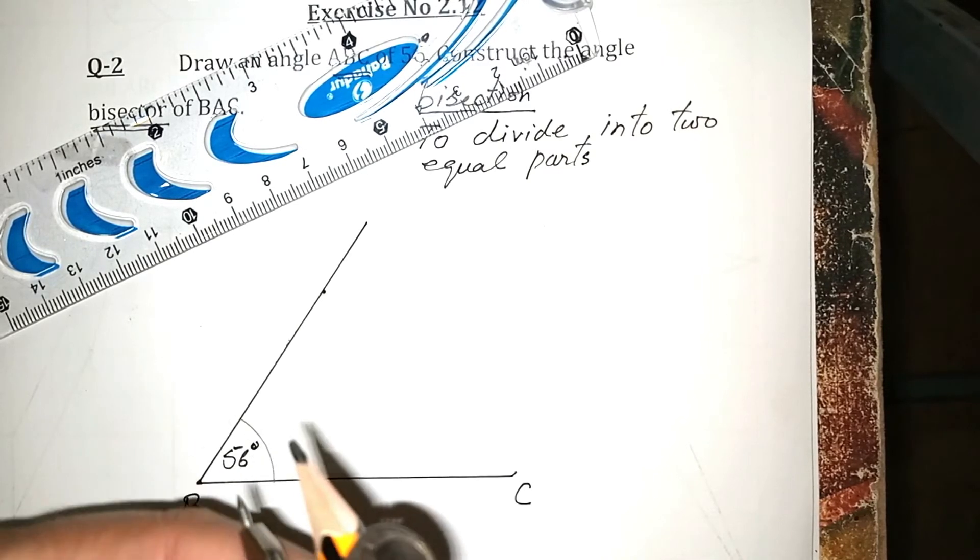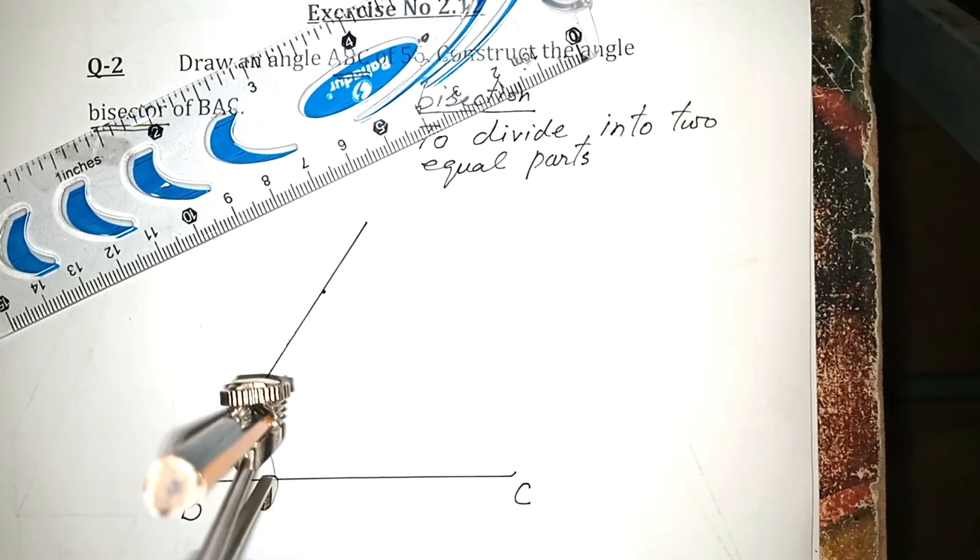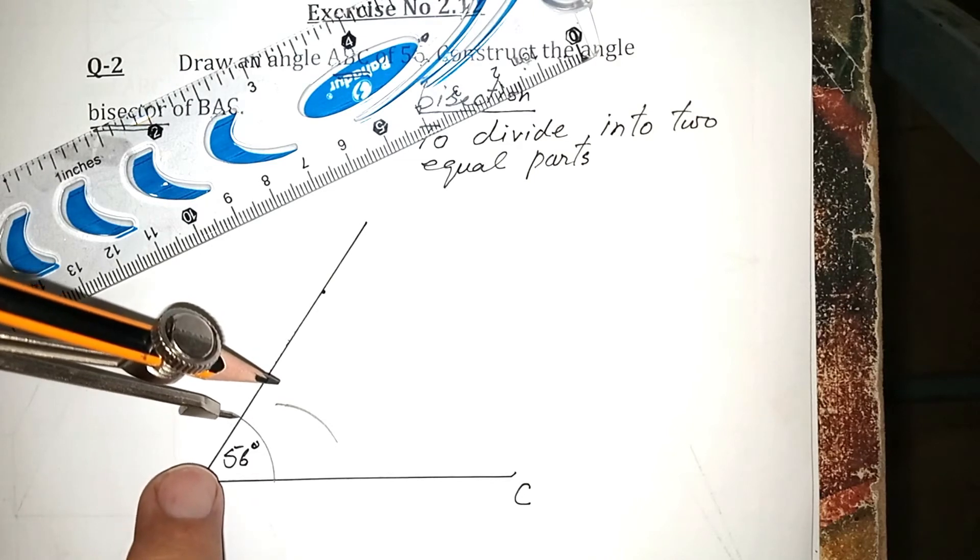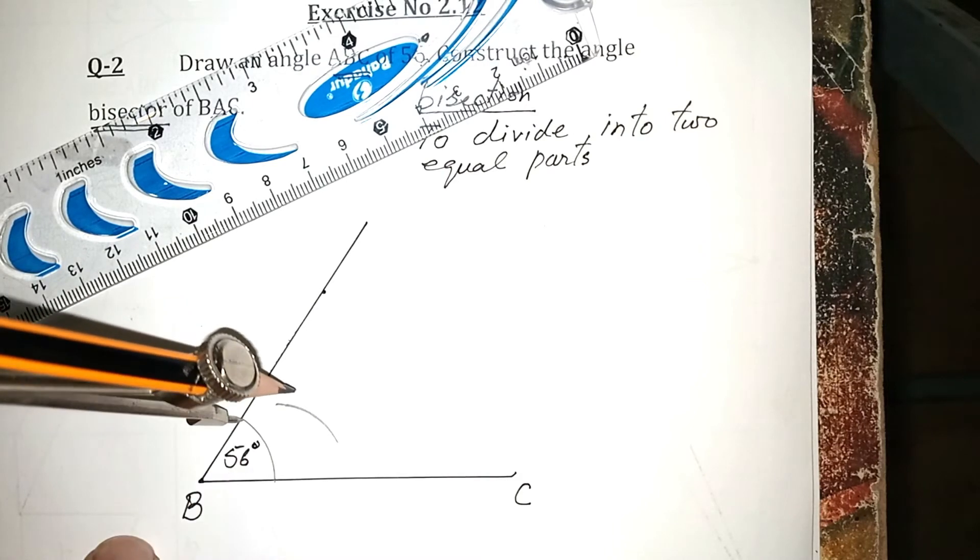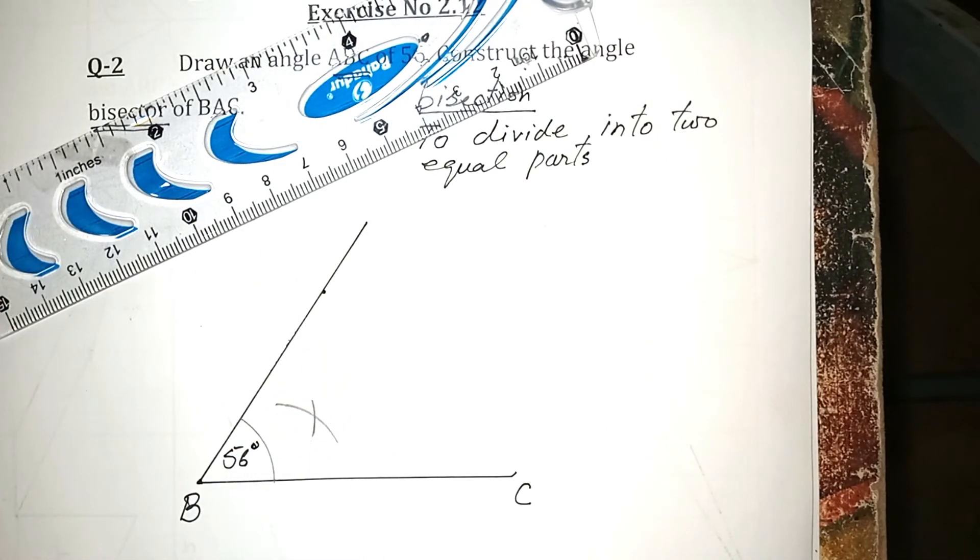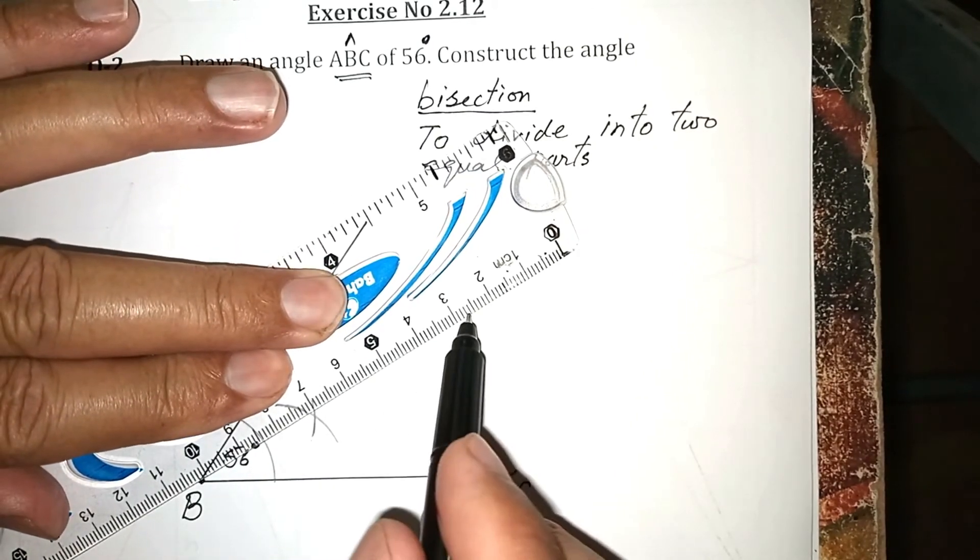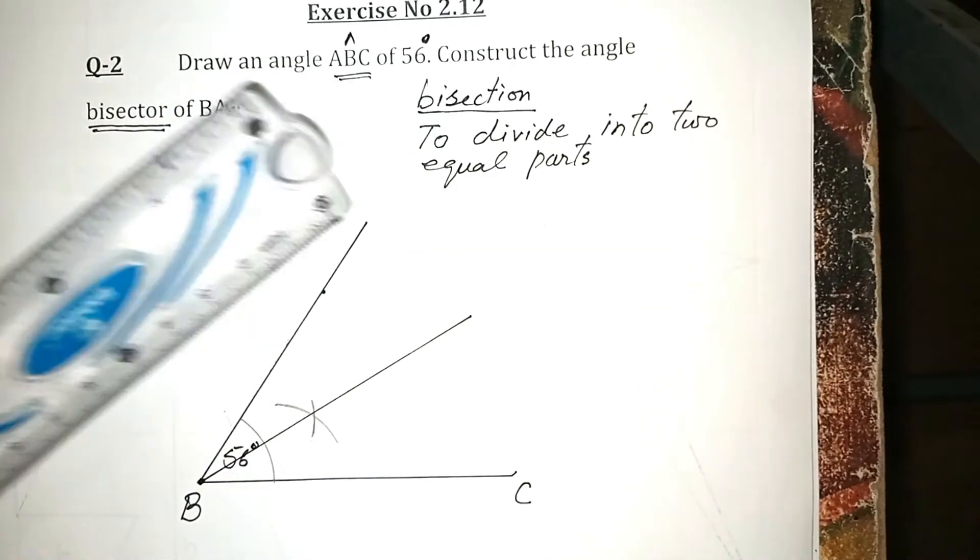Now again, take the compass and make an arc from here. Now you are supposed to draw a line crossing from this point. From here, these two arcs have cut each other. This is the bisection of the angle 56.